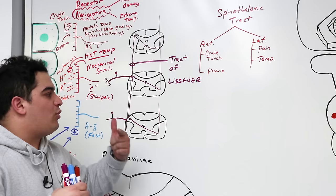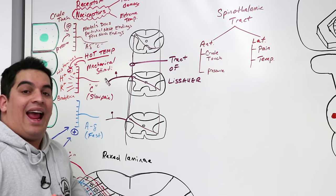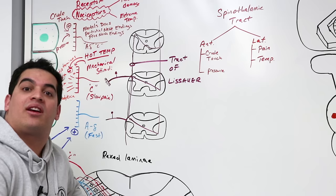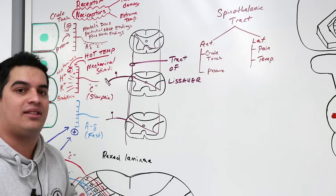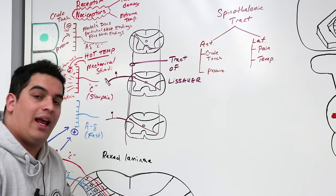Why is the tract of Lissauer important clinically? If there's a lesion at T6, the area that's actually affected could be two or three spinal cord segments below that, on the contralateral side. This is because of these ascending and descending fibers — that's why this tract matters for understanding clinical lesion presentations.